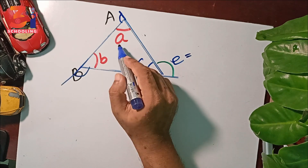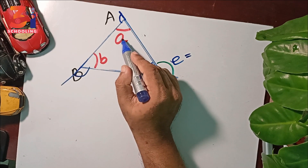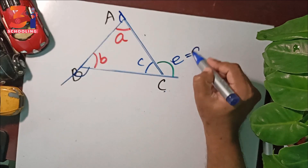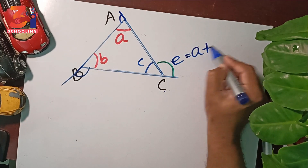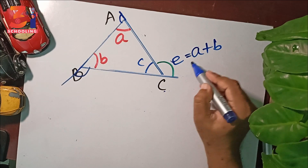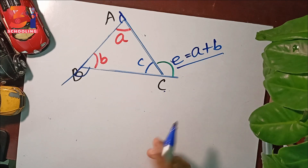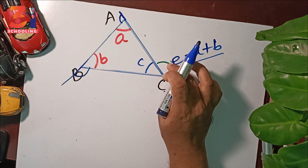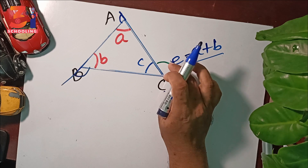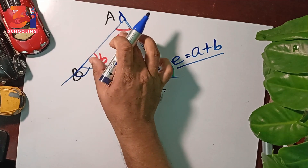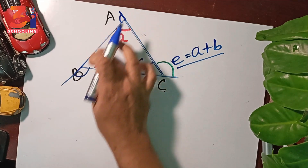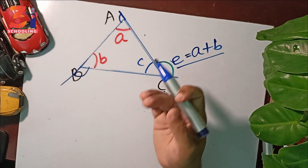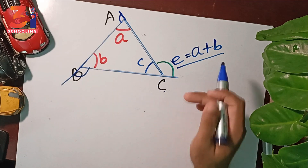The exterior angle is equal to the sum of the opposite interior angles. The inner angles are A plus B. This is the formula. The exterior angle equals the opposite inner angles of the triangle.